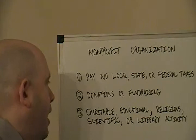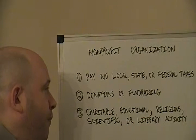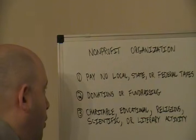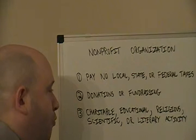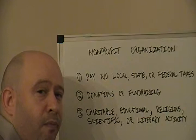Number two: you're going to be receiving money through donations or fundraising. This is how the majority of not-for-profits get and raise money for their programs. Number three: in order to have not-for-profit status, you need to be engaged in either charitable, educational, religious, scientific, or literary activity. Anything outside those categories and you're not going to be able to get not-for-profit status.